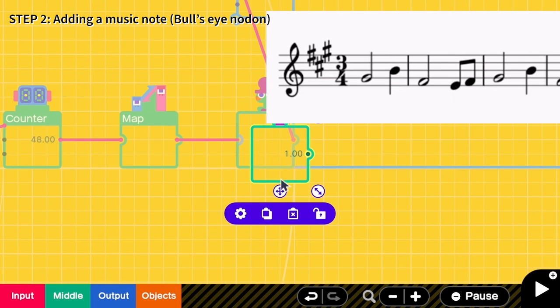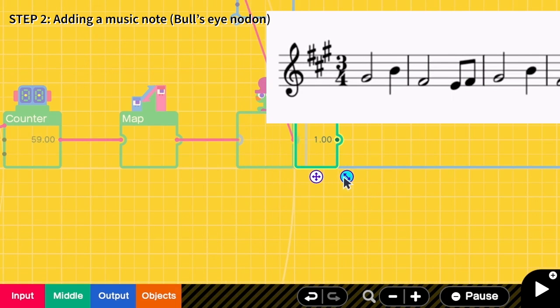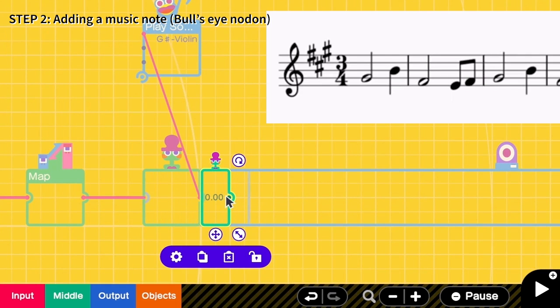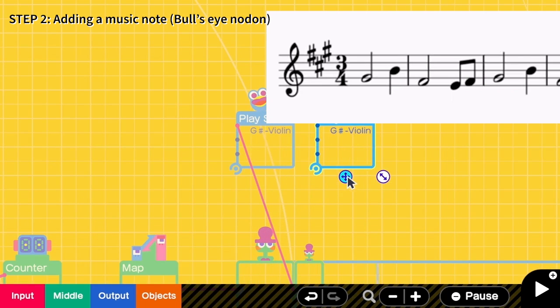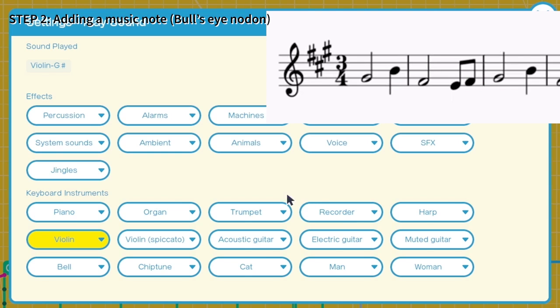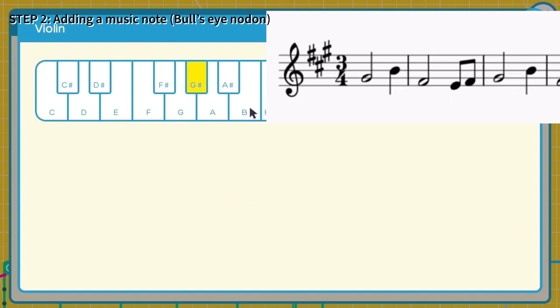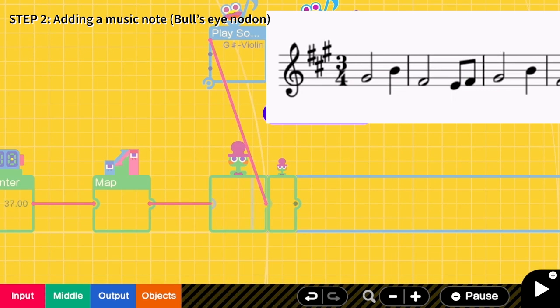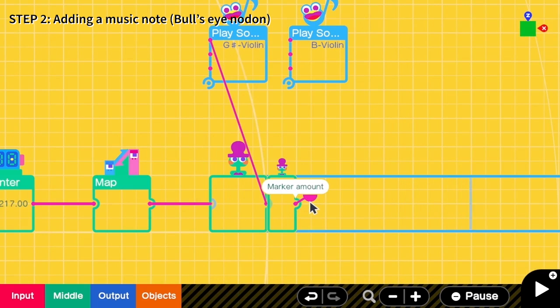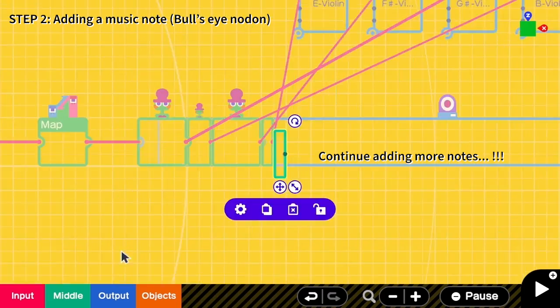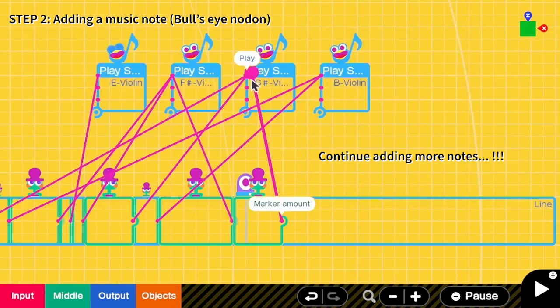And the second note only takes one tempo. The size is half of the first one. Then I need another play sound note. On this one I change to B and then I connect the output of this bull's eye to play part of this B. And then I keep repeating this for other notes.